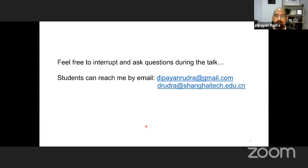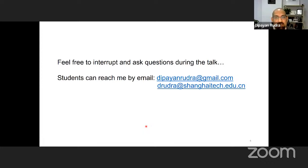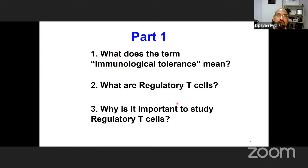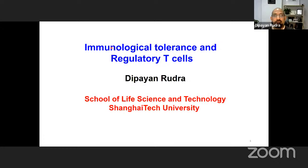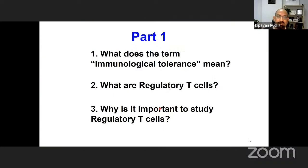This presentation is in two parts. The first part is a teaching section for students — undergrads, postgrads, and PhD aspirants — introducing immunological tolerance and regulatory T cells. The second part will discuss a specific research story we published last year. Please feel free to ask questions throughout the talk and email me with any future questions. The title of my talk is 'Immunological Tolerance and Regulatory T Cells,' so one part covers tolerance and the other covers regulatory T cells.